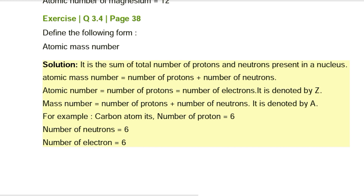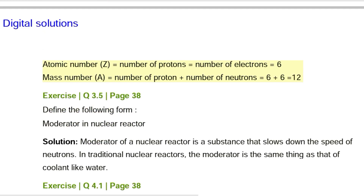For example, carbon atom: number of protons = 6, number of neutrons = 6, number of electrons = 6. Atomic number Z = number of protons = number of electrons = 6. Mass number A = number of protons + number of neutrons = 6 + 6 = 12.